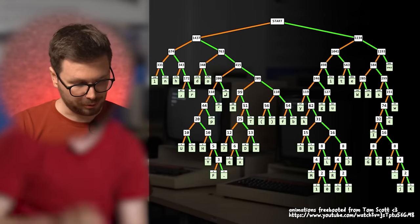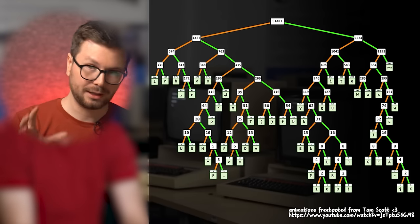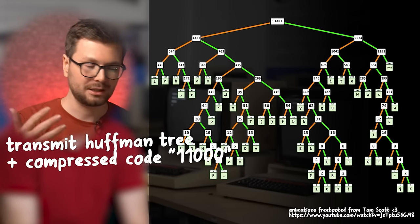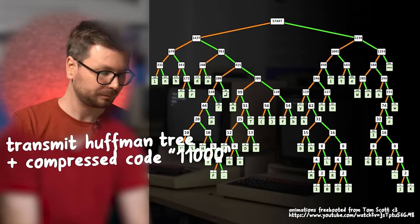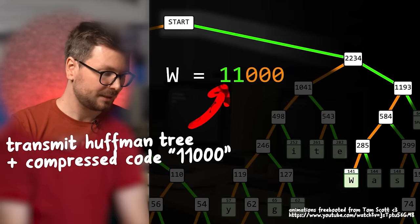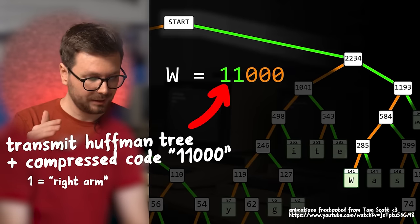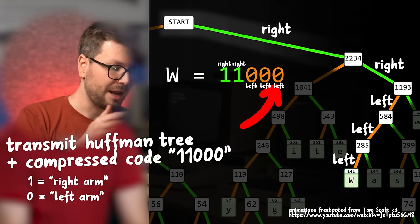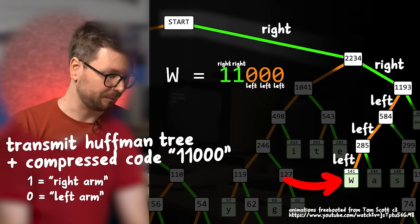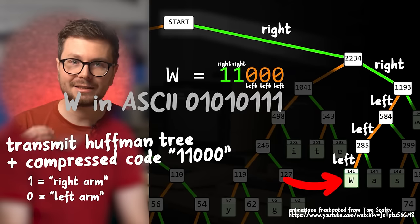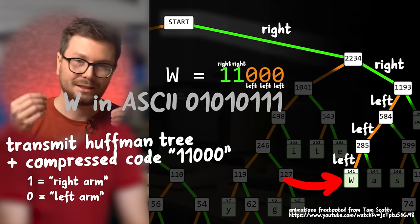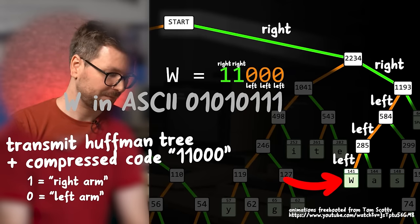The tree can be used to compress data, but let's talk about the decompression case. Let's say we transmit this tree and then the compressed bits 11000. Then the receiver can decode it. We start reading the bits, and a 1 means right tree and 0 left. So right right, left left, and we reached the symbol W. Which means we successfully compressed an ASCII character W, usually encoded in ASCII 8 bits, down to just 5 bits. So that's Huffman codes and Huffman trees explained.